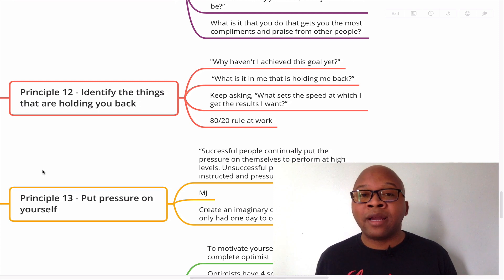So identify the things that are holding you back. Why haven't I achieved this goal yet? What is it? And be honest. Be honest with yourself. Because the sooner you can find that bottleneck, the sooner you can find that constraint, the sooner you'll be able to release it and get rid of it. If you can get rid of that constraint, if you can release the emergency brake, then you'll be able to accelerate at a much faster pace. So important. Here's another question. What is it in me that is holding me back?